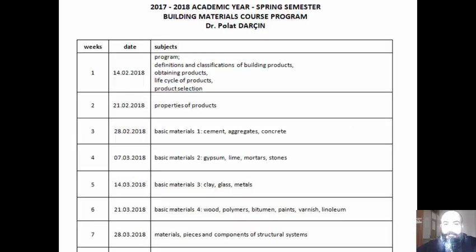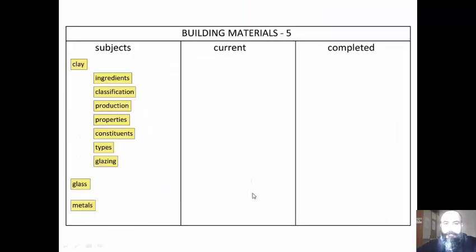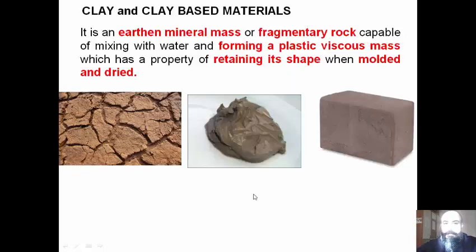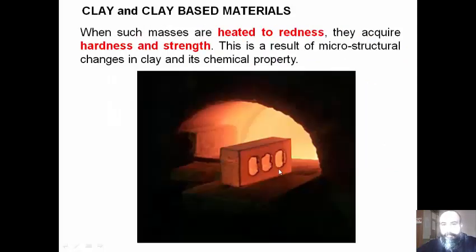Hello everyone. In the fifth week of the building materials course, we are going to talk about clay, glass, and metals. Let's start with clay. Clay is an earthen mineral mass or fragmentary rock capable of mixing with water and forming a plastic, viscous mass — a property of retaining its shape when molded and dried. When such masses are heated to redness, they acquire hardness and strength, as a result of microstructural changes in clay and its chemical properties.